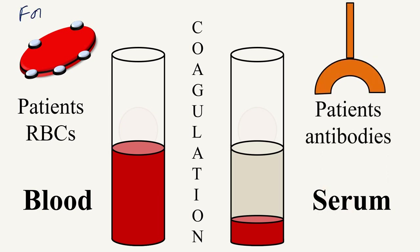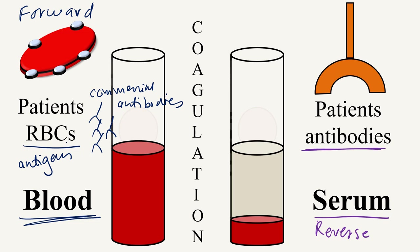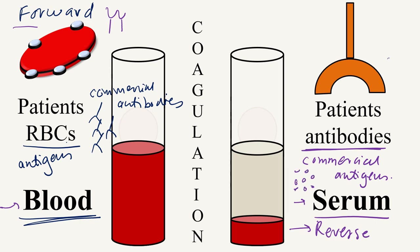In forward typing, we use the blood sample, so we have the antigens on the RBCs, and to check the blood group of the person, we add commercially prepared antibodies. In reverse typing, we use the serum of the patient. In the serum, the patient's own antibodies are already present. Thus, we add commercially prepared antigens to find out the blood group. So in forward typing, you use the blood sample which contains the antigen, so you add the antibodies. In reverse typing, you use the serum sample which contains the antibodies, so you add the commercially prepared antigens.